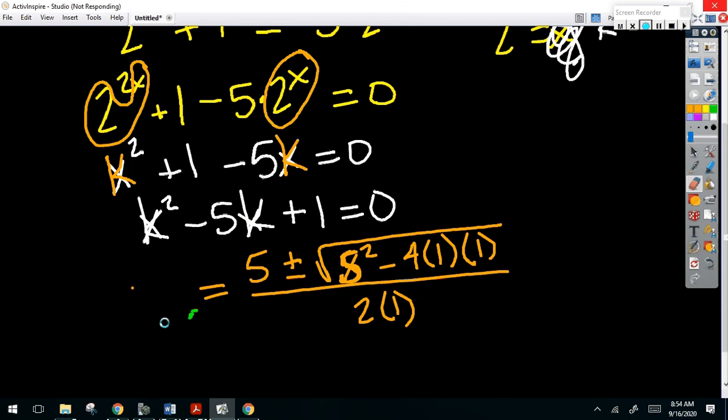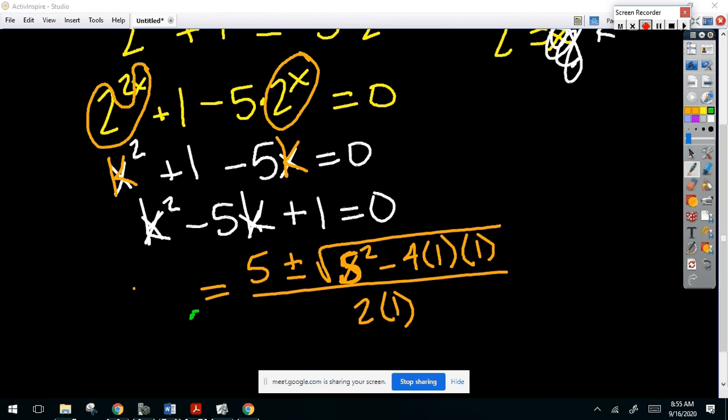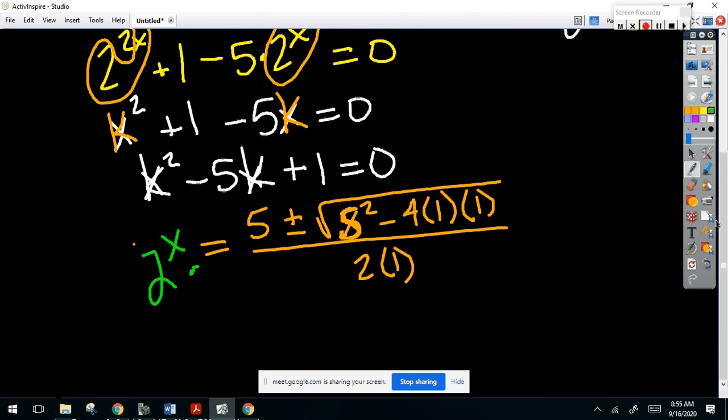When I got to this point, instead of putting x over here, I put 2 to the x because really, my x, we subbed in for 2 to the x, right? You probably did that, but maybe a little bit later on down the line. Okay, and that's fine. I just didn't want to throw it in here and then go, what? That doesn't even make sense.